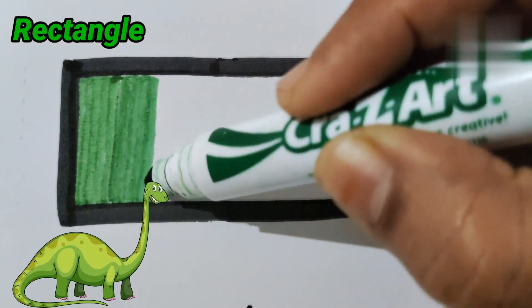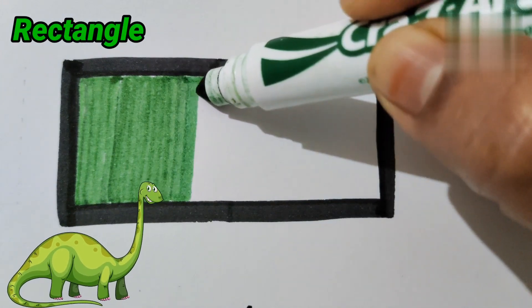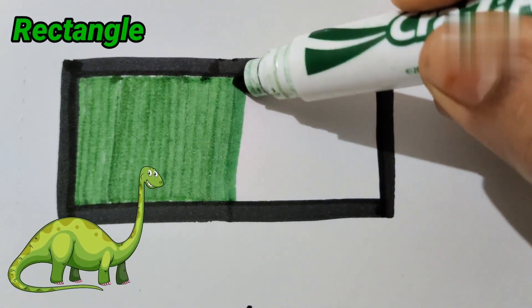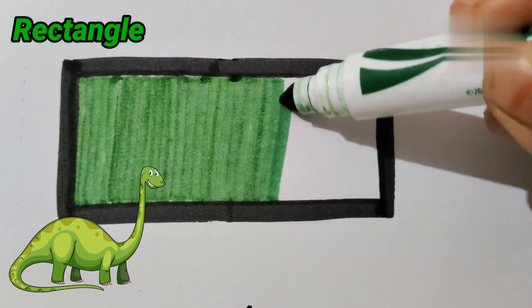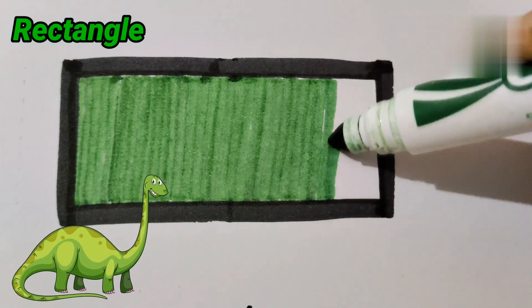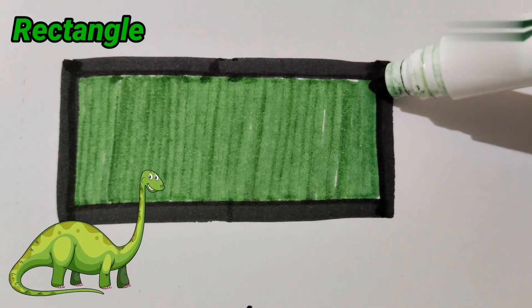Look who is here, dinosaur! I have a dinosaur in green color. Wow, this green color is looking amazing in the rectangle. My rectangle is ready.